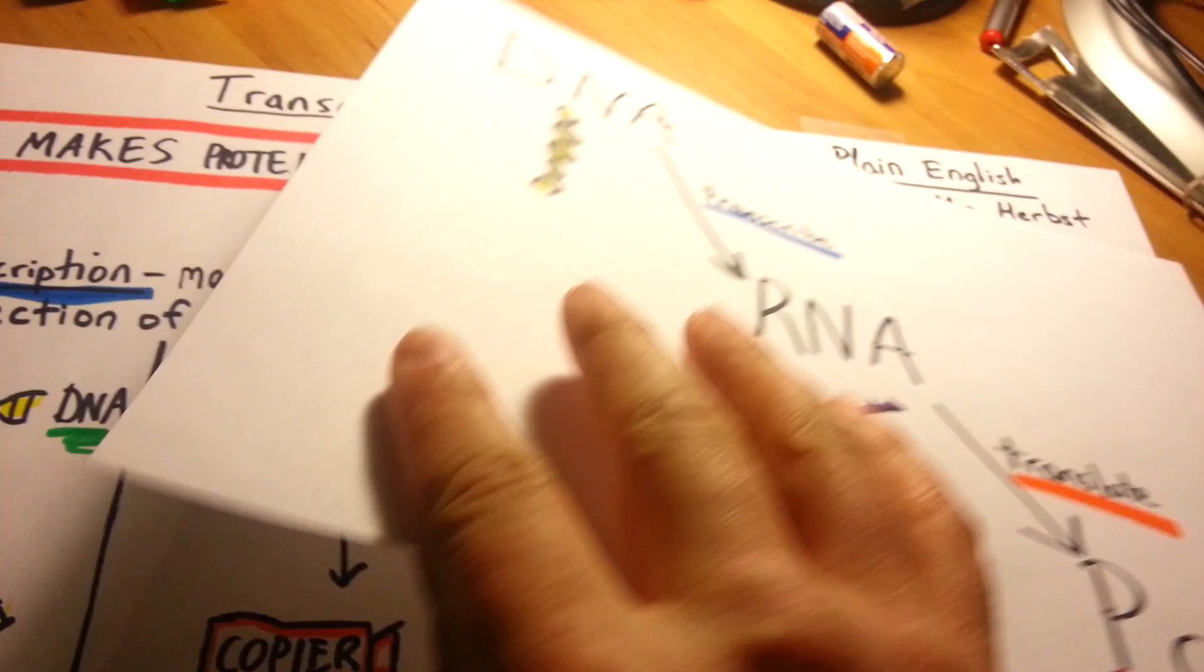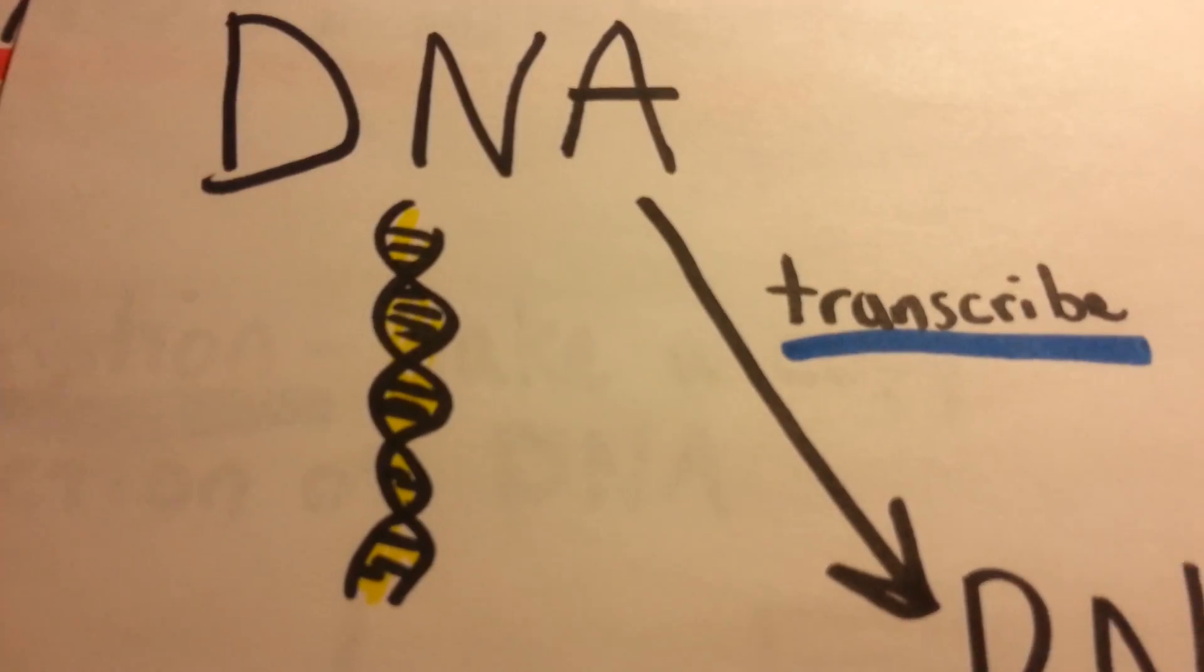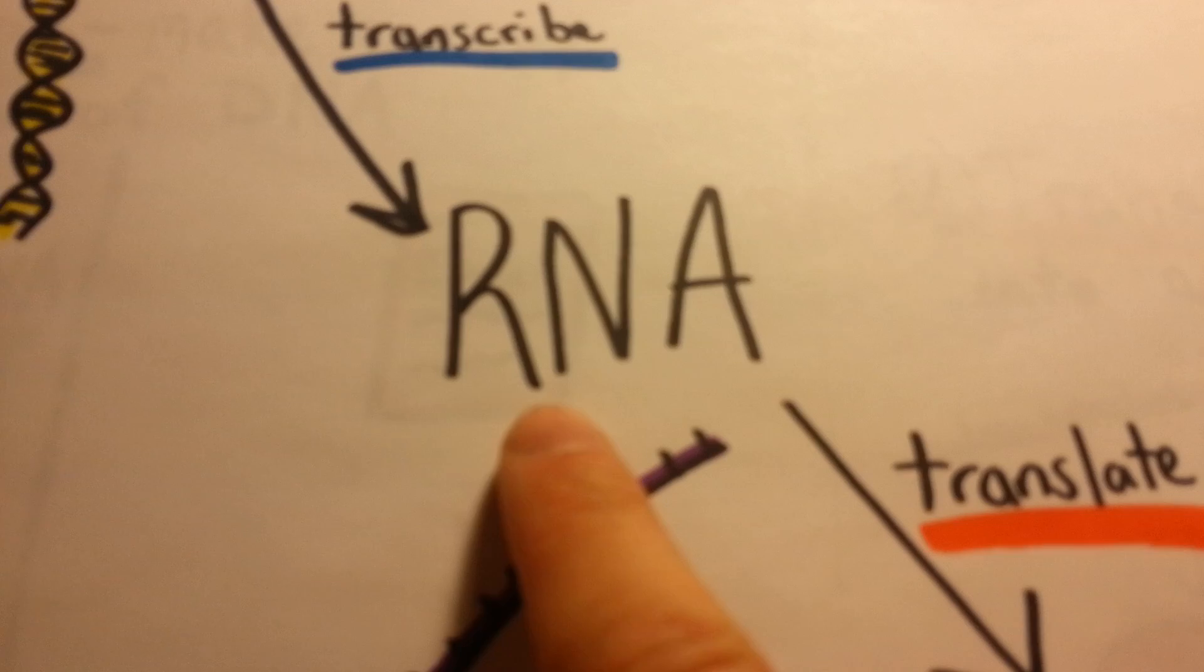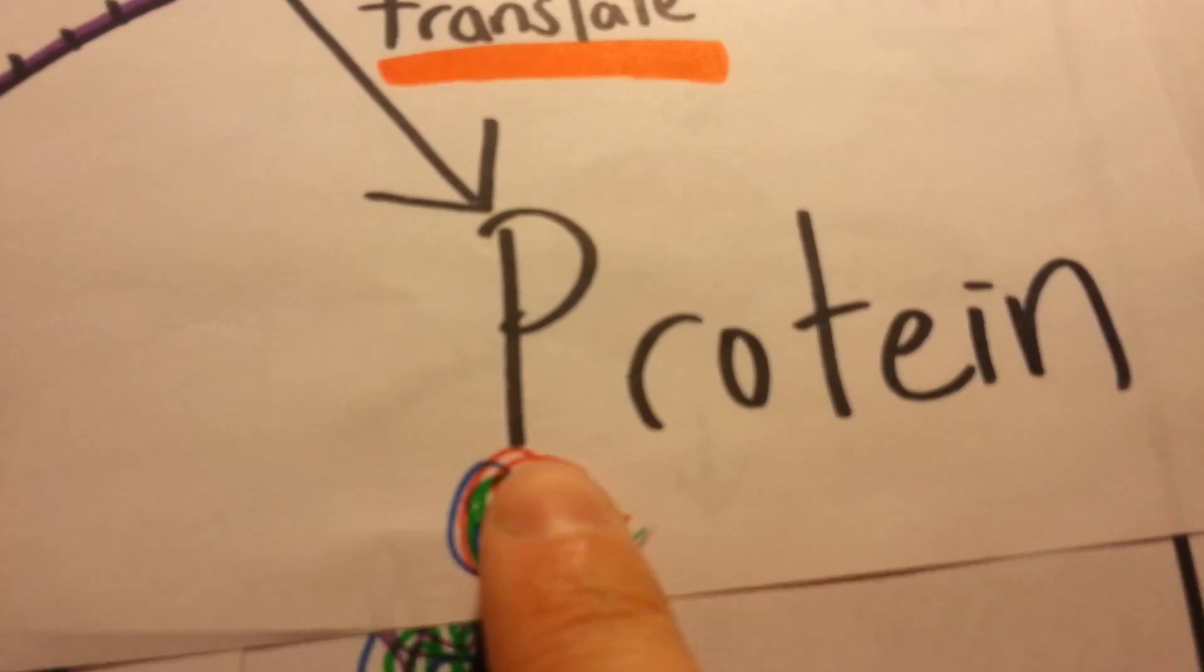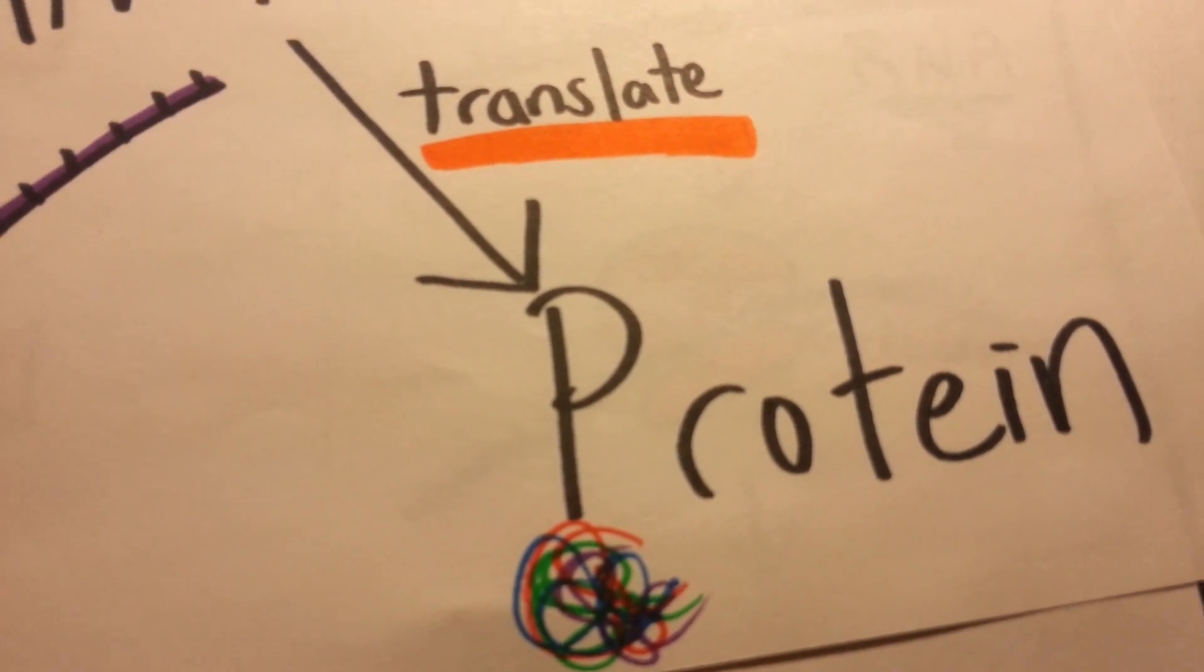So ultimately, let's go ahead and sum up what happens. We have DNA, which is going to be transcribed into this thing called RNA, which is going to be translated into this thing called a protein. And that protein can serve many functions in this cell.